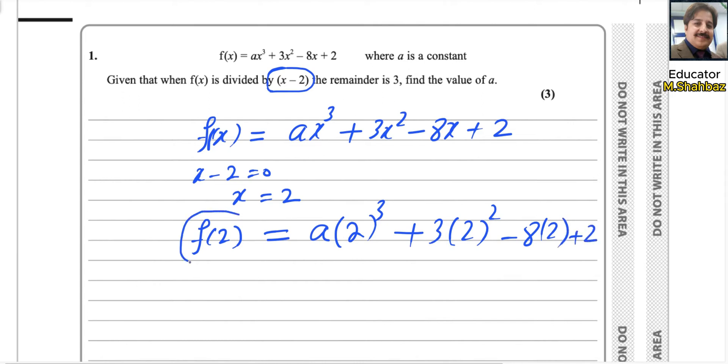We know that this is the remainder. Because the remainder is 3, therefore you can replace f(2) as 3. So you can replace R with 3. And here, 8a plus 12 minus 16 plus 2.